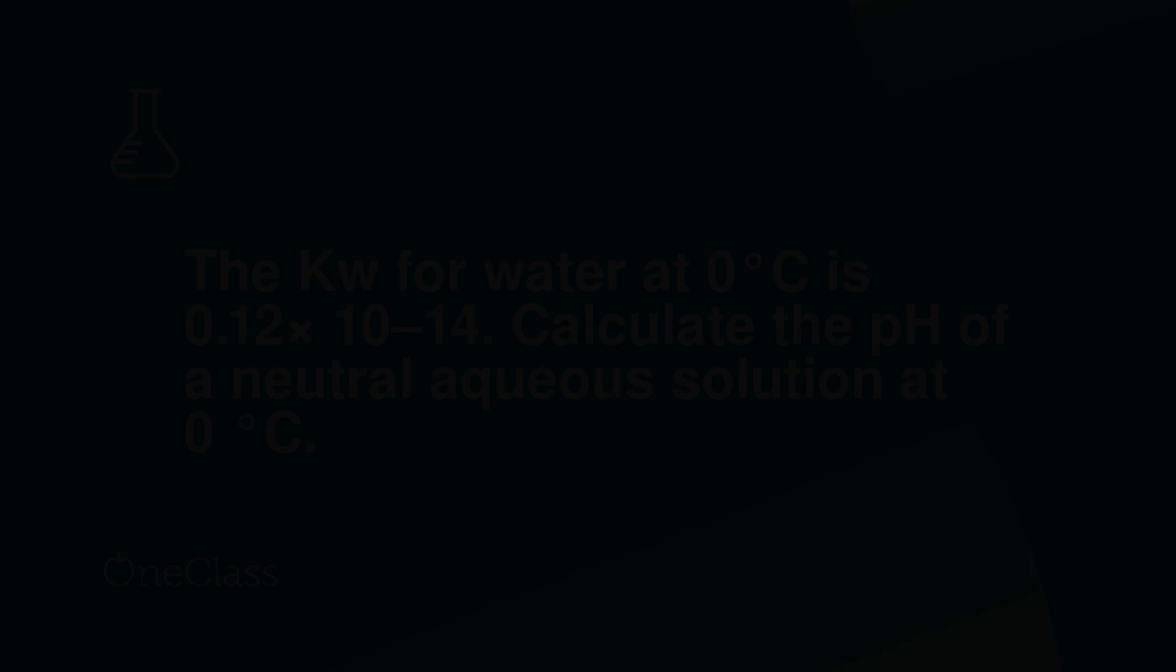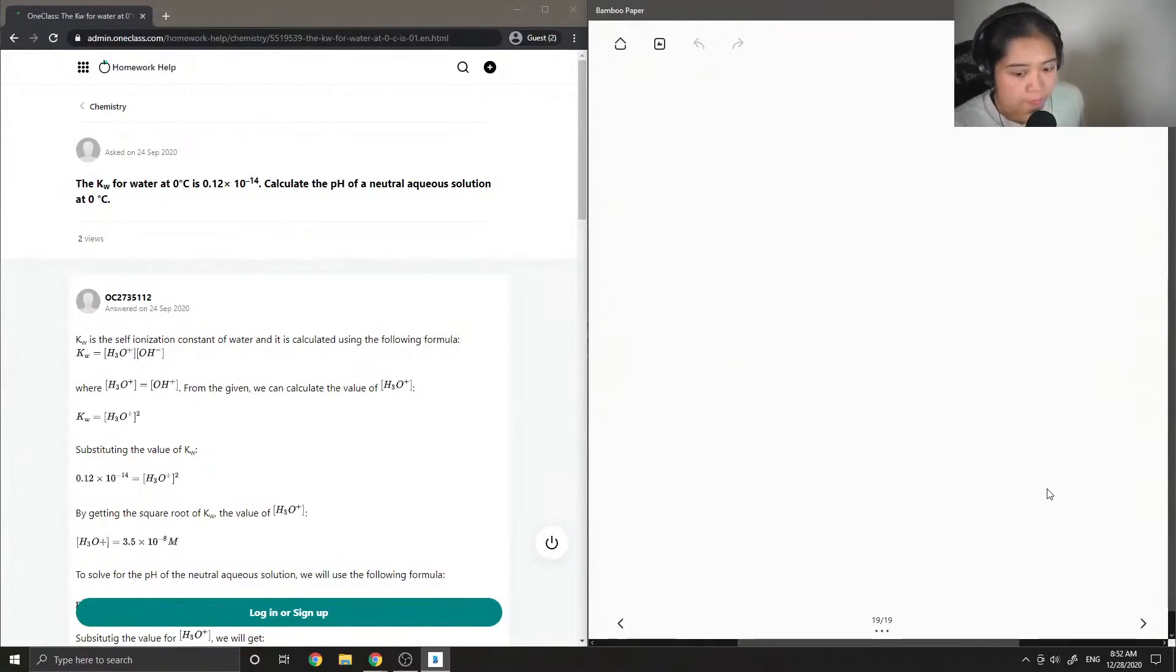Okay, so question number two: the Kw for water at zero degrees is 0.12 times 10 to the negative four. Calculate the pH of a neutral aqueous solution at zero degrees.